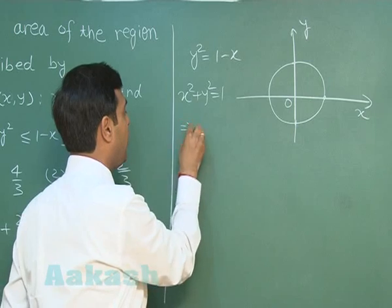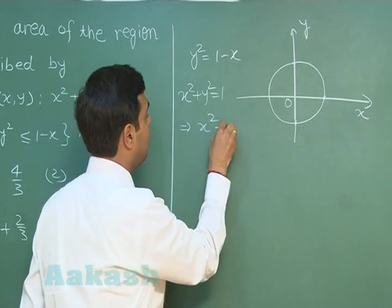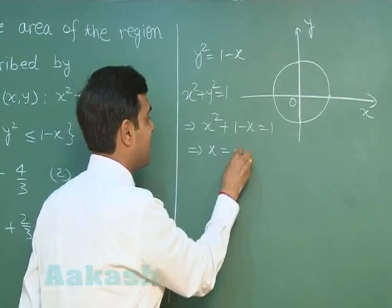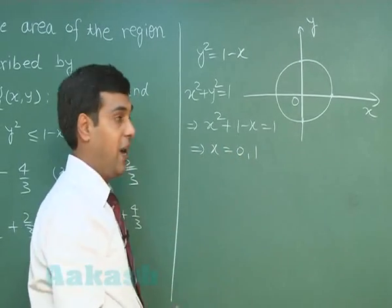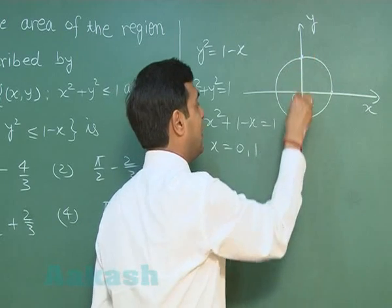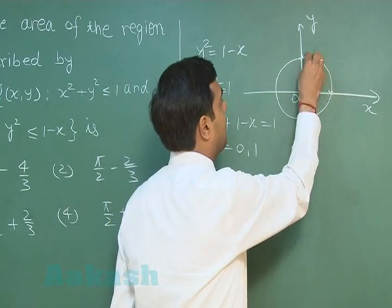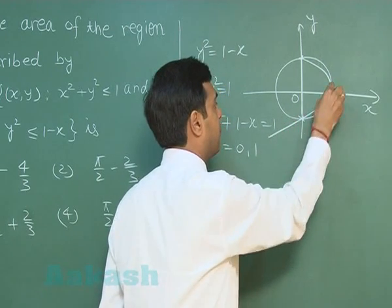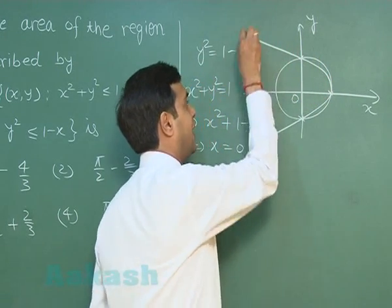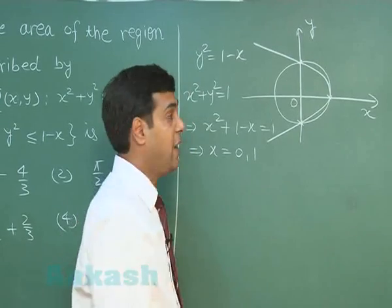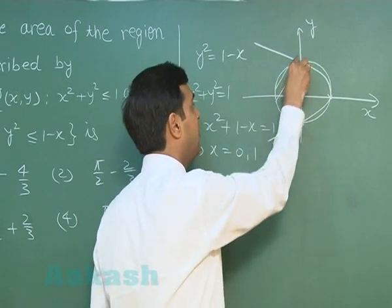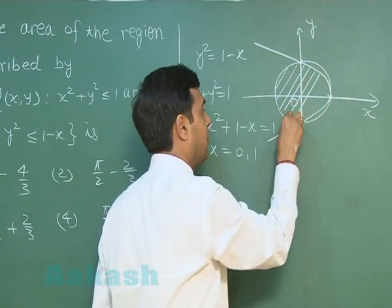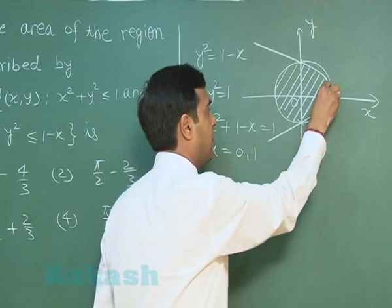On substituting, we obtain x² + 1 - x = 1, that is x = 0 or x = 1. So these are the points of intersection. Drawing the parabola now. The required region is the shaded one.